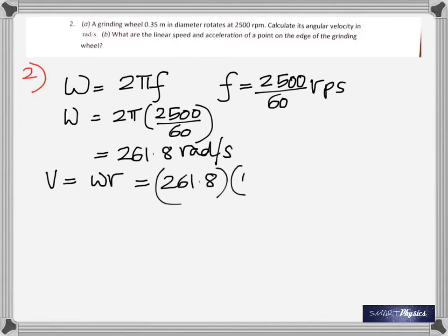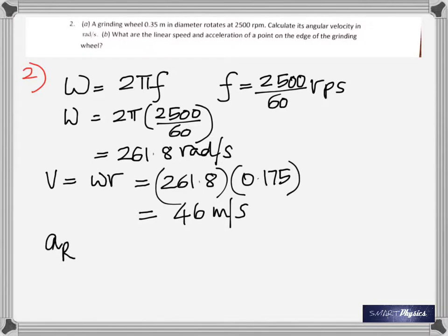Since you have the angular speed multiplied by the radius — and the radius is half of the diameter — you get 46 meters per second. Then you're asked to find the radial acceleration. Does anybody know the equation for radial acceleration? It's V squared over the radius.